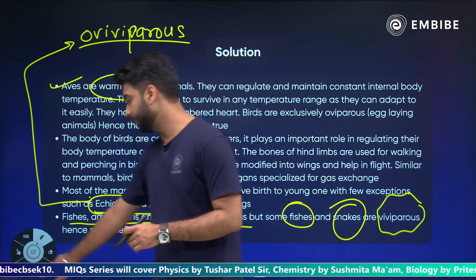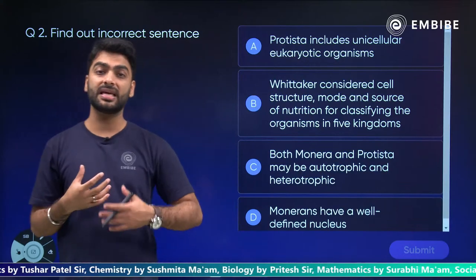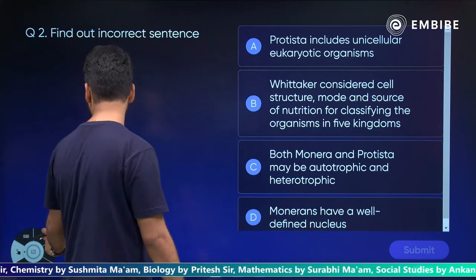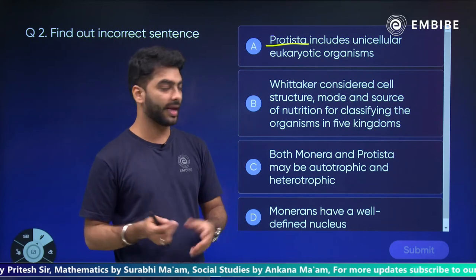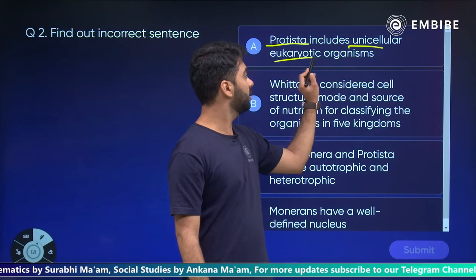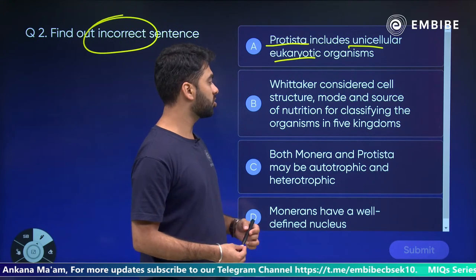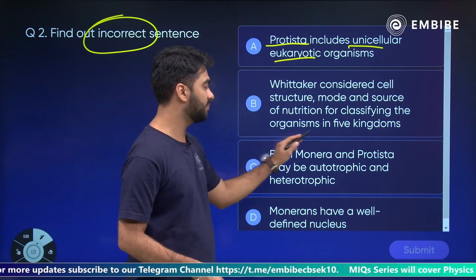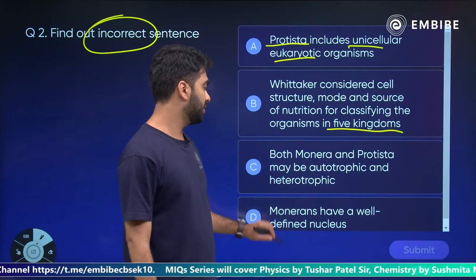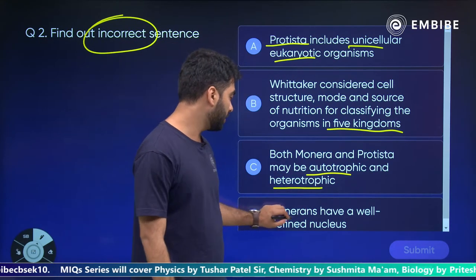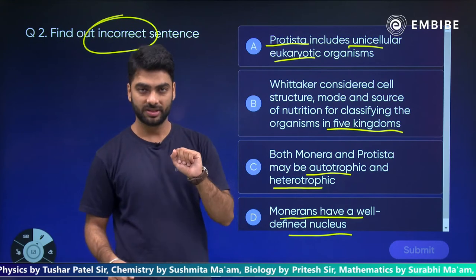This was a question from the animal kingdom. Similarly, next question — find out the incorrect sentence. Again, we have to find the incorrect sentence. Protists are cellular organisms; they include both unicellular eukaryotic organisms. R.H. Whittaker took cell structure, mode and source of nutrition for classifying the organisms in five kingdoms — Monera, Protista, Fungi, Plantae, Animalia. Both Monera and Protista may be autotrophic and heterotrophic. Monerans have a well-defined nucleus. You have to find the incorrect statement. I'll give you 20 seconds.